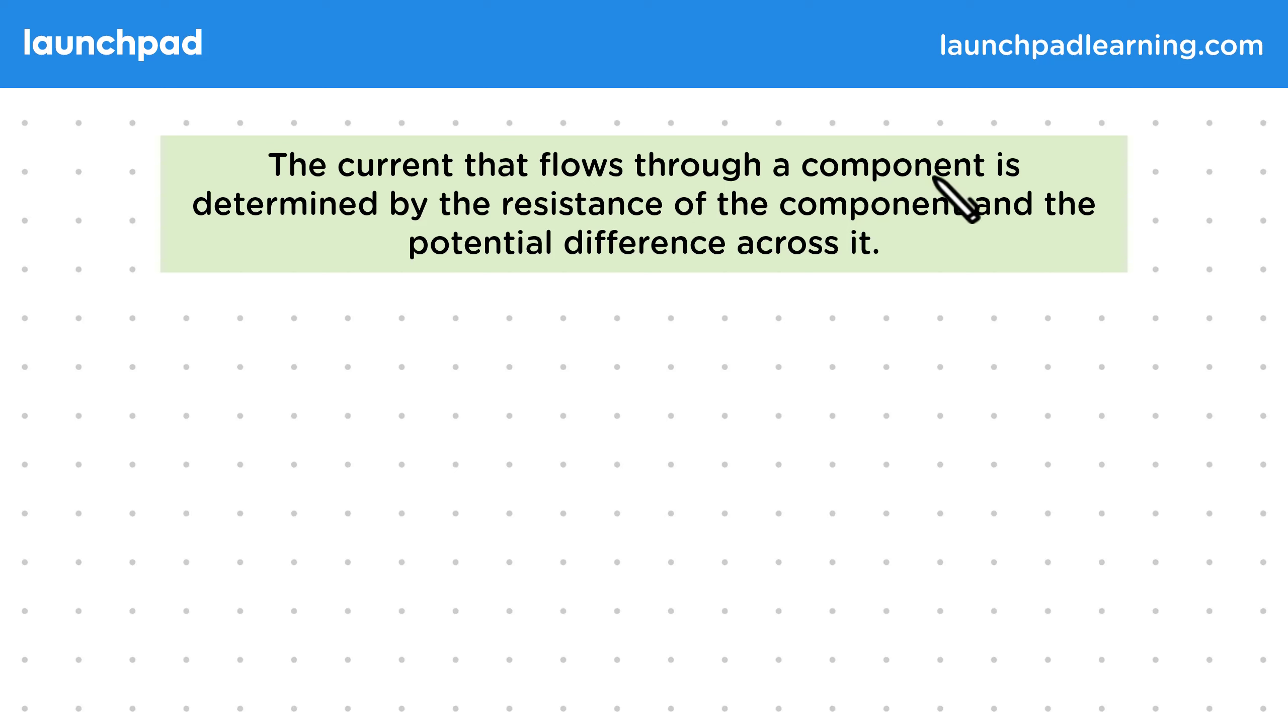The current that flows through a component is determined by the resistance of the component and the potential difference across it.